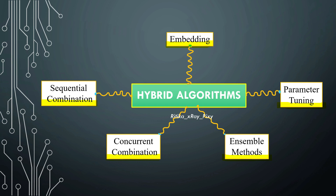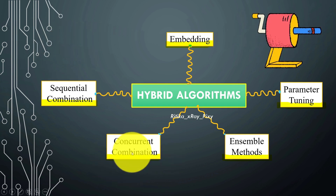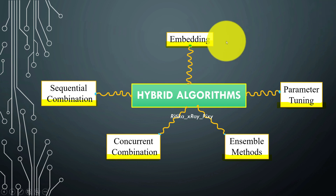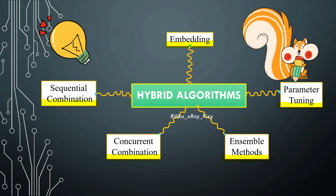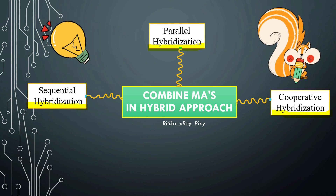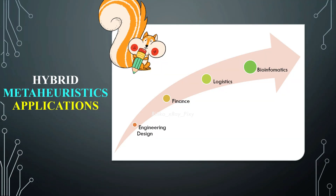In sequential combination, one metaheuristic algorithm generates a set of candidate solutions, then a second algorithm is applied to refine the best solution. In concurrent combination, two or more metaheuristic algorithms run in parallel and their solutions are combined or exchanged periodically. In embedding, one metaheuristic algorithm is embedded within another. It is important to test and evaluate different hybridization strategies to determine which approach works best for a given problem, depending on each algorithm's strengths and weaknesses.